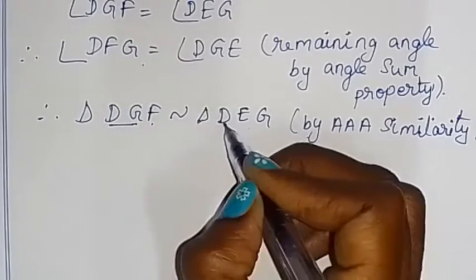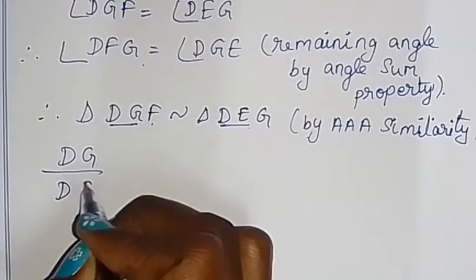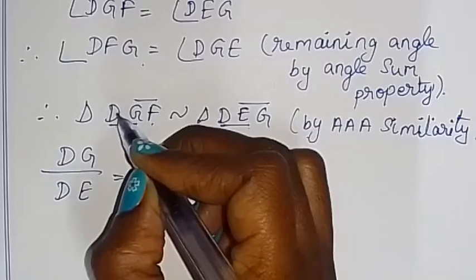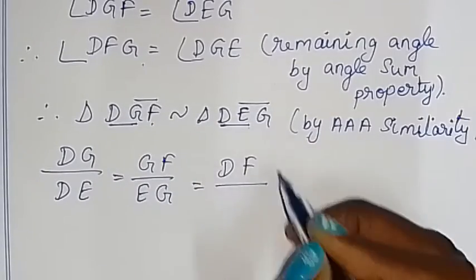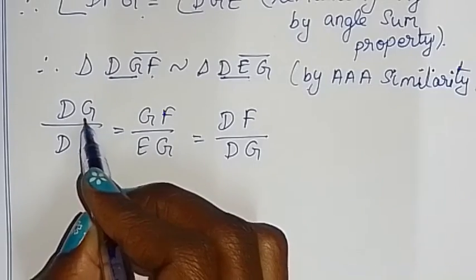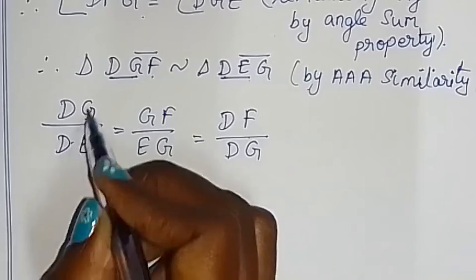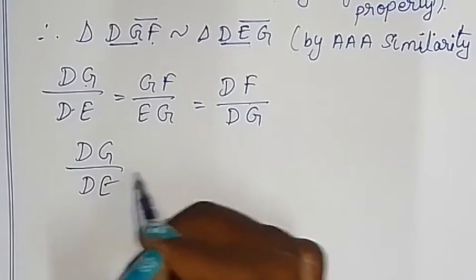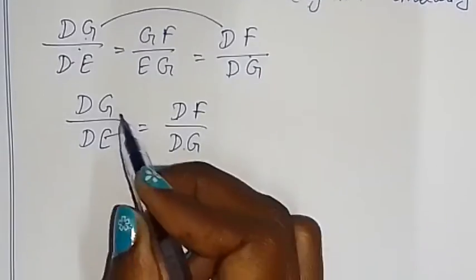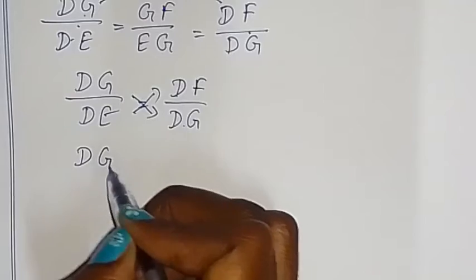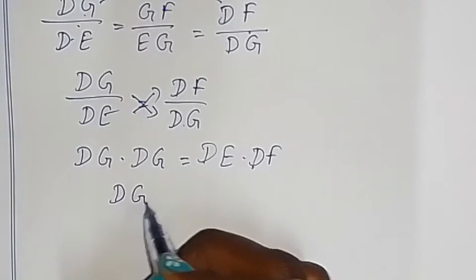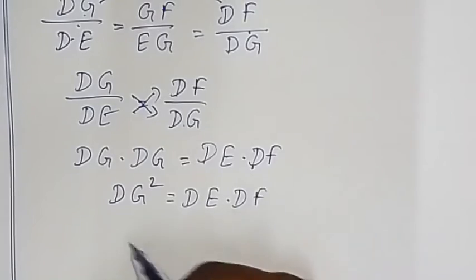Since the triangles are similar, their corresponding sides are proportional. So DG by DE is equal to DF by DG. Cross multiplying: DG into DG equals DE into DF. Therefore DG squared equals DE into DF. Hence proved.